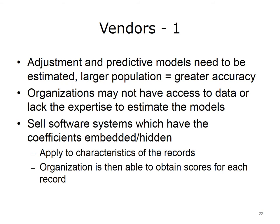Risk adjustment and predictive models need to be estimated, and for more accuracy those estimates should be based on a large population. Because organizations may not have access to the data or the expertise necessary to estimate the models, they frequently acquire existing models from vendors. The vendors sell software systems which have the coefficients embedded — sometimes even hidden in the software — and apply them to the characteristics of records at the organization. The organization is then able to obtain scores for each record for risk adjustment or predictive modeling. The reason the software sometimes just gives a list of people above a threshold rather than the score itself is that if the score were provided, the organization might figure out the coefficients and no longer need to purchase the product.